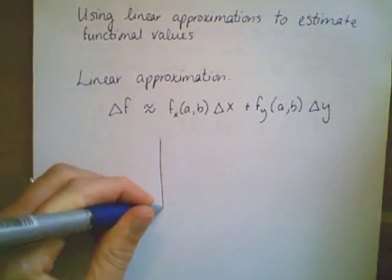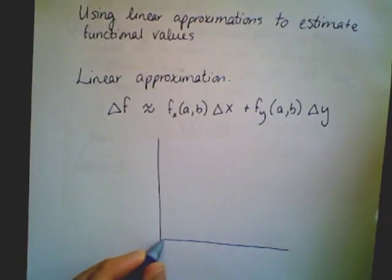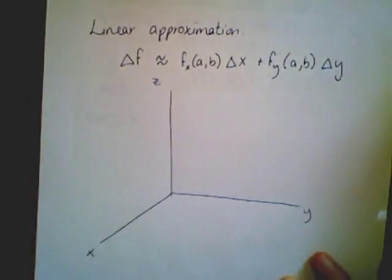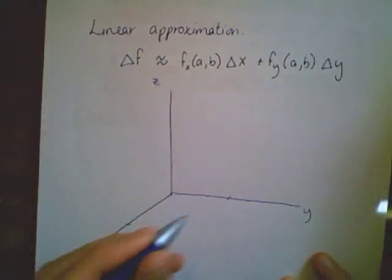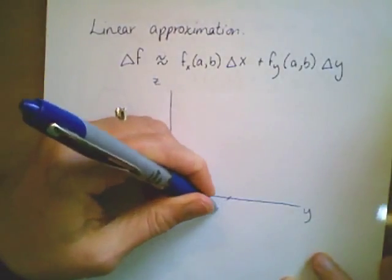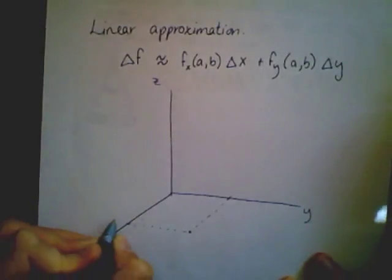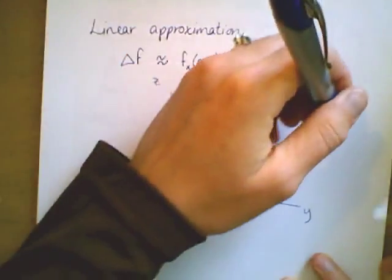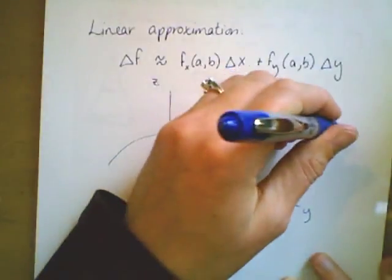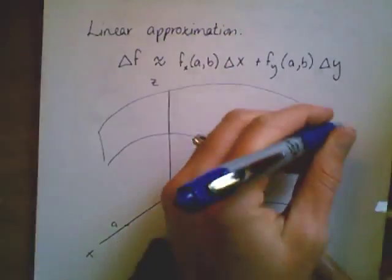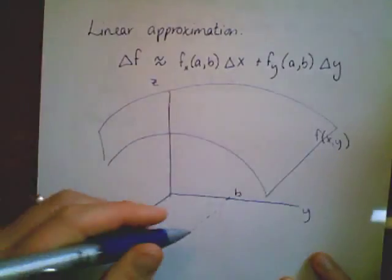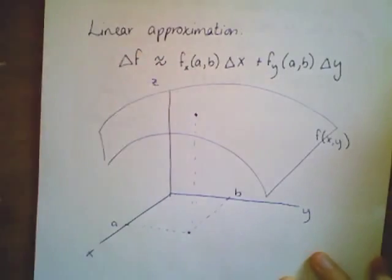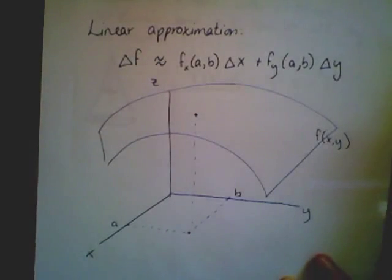I'm going to draw a picture to help motivate what's going on. Let's say we're in the x,y,z plane, and we find a point (a,b) down in the x,y plane. We have some function up here - I'm going to make my function look like a wavy carpet. This is my f(x,y), and the output lies up here at f(a,b).